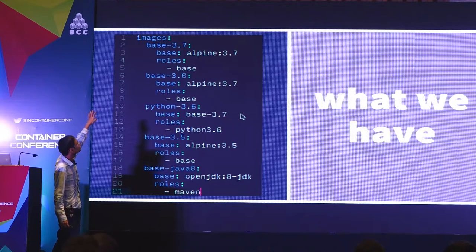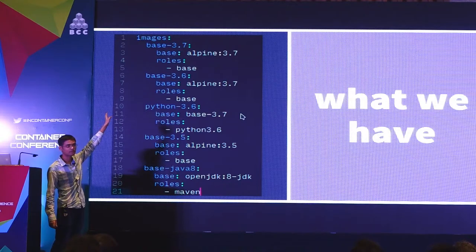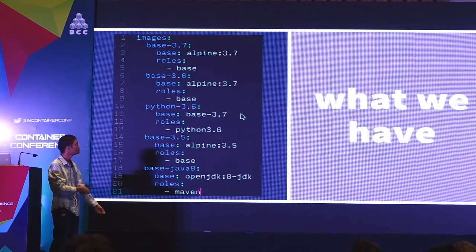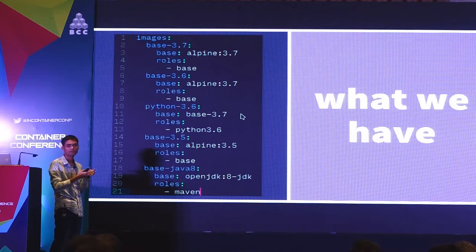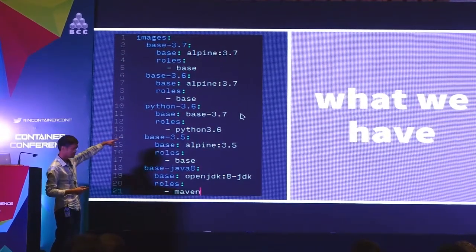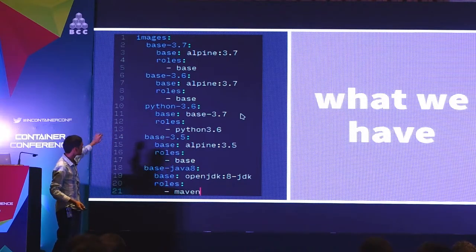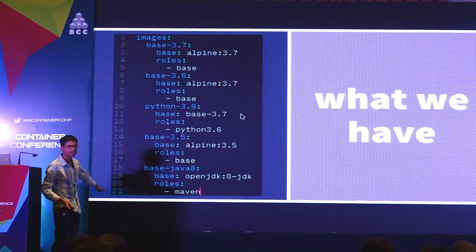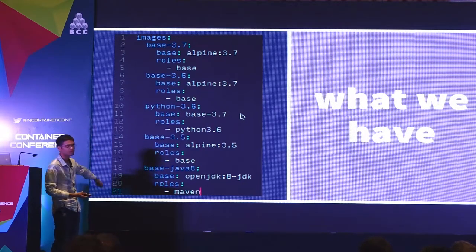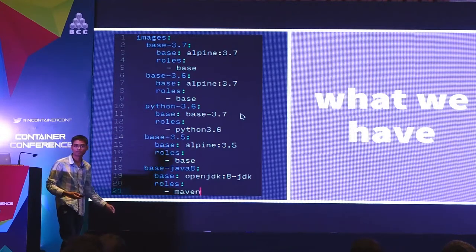We know we must have three base images. We have Alpine 3.7, called base-3.7. This essentially runs a role — a role being equivalent to what you'd have in Ansible — where we say this is a base thing that must go everywhere. Then we have a Python 3.6 image that must inherit from base-3.7. We want four different images pushed out, and any time I make a change to base, it percolates everywhere else accordingly.